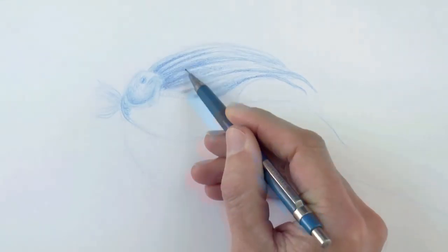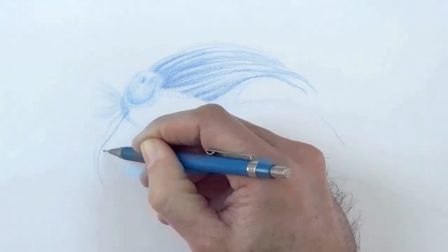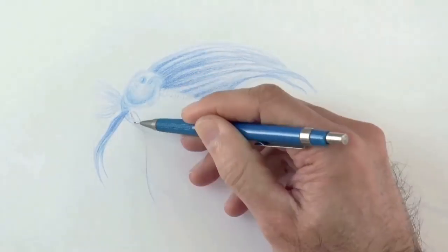We go over it again for greater intensity and then we draw other small fins. Loosely, again, I don't want them to be stiff.